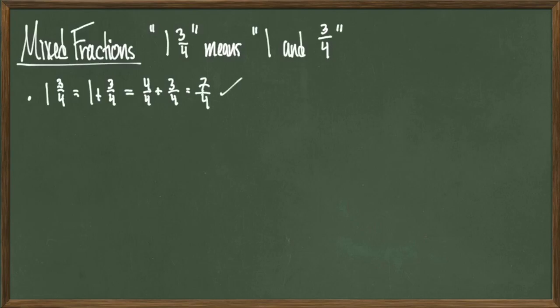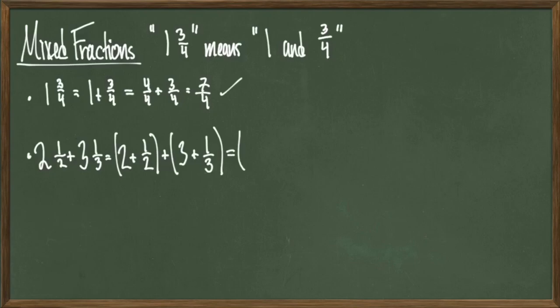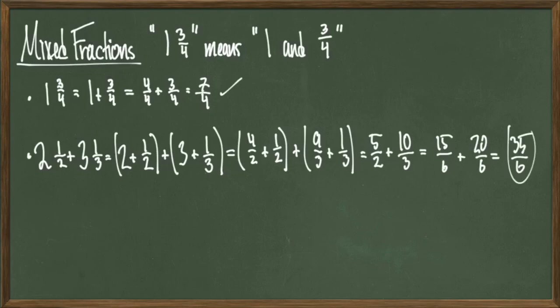Our next examples will show more operations with mixed fractions. We'll first consider 2 and 1 half plus 3 and 1 third. We'll first simplify this into 2 plus 1 half plus the quantity 3 plus 1 third. These individual quantities can become 4 over 2 plus 1 half plus 9 over 3 plus 1 third to get common denominators. Adding the quantities within the parentheses gives us 5 halves plus 10 thirds. These become 15 over 6 plus 20 over 6 to get common denominators. And this simplifies to 35 over 6 and we're done.